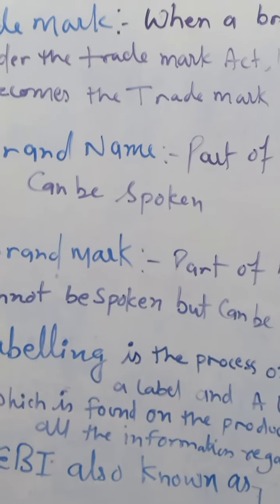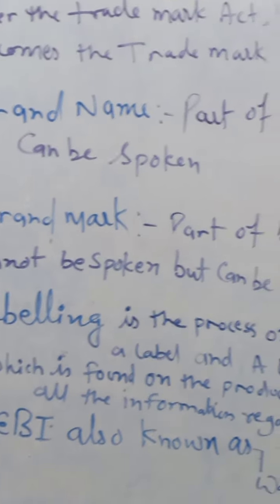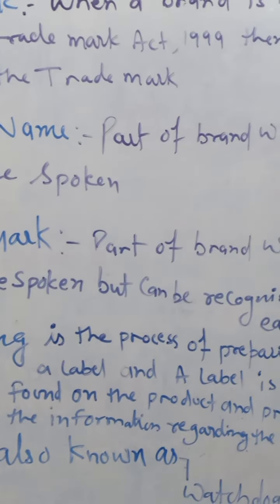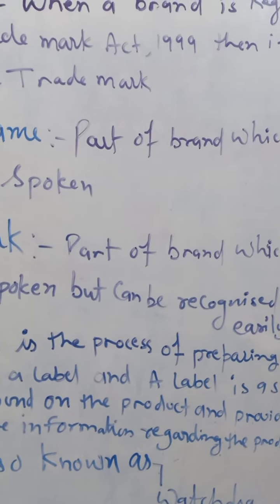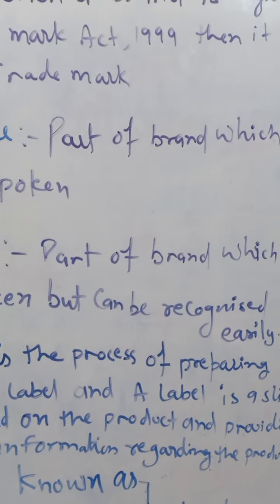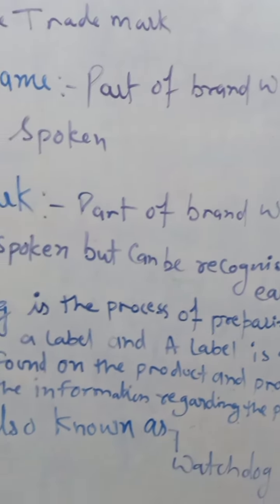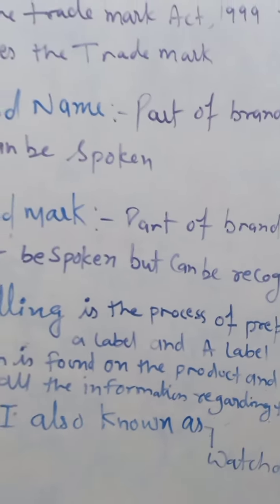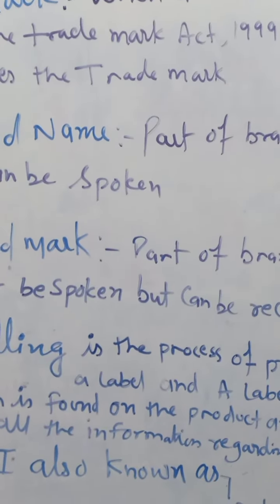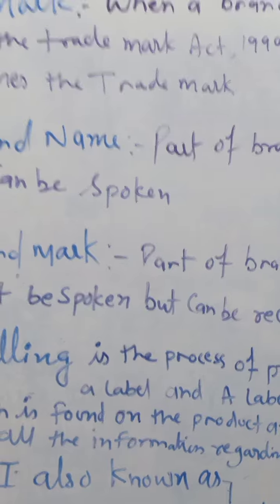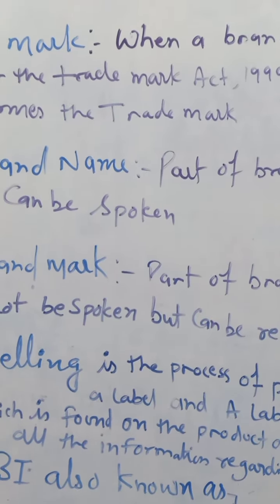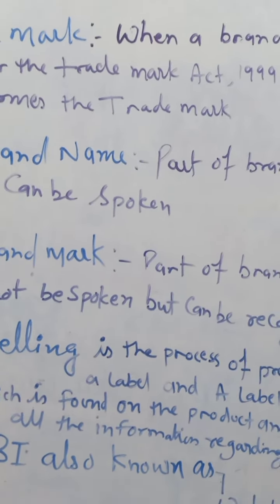Fourth one is labeling. Labeling is the process of preparing a label. A label is a slip which is found on the product, providing all the information regarding the product. Aapne dekha hoga medicine ki jo bottles hoti hai, ya bhi koi bhi product hai, uspe jo label laga hota hai, woh labeling process hota hai. Labeling process ke dauran hi usme sari information ko likha jata hai.